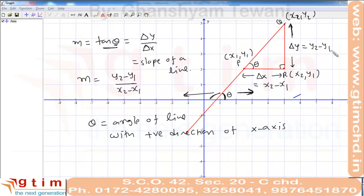The slope of a line remains constant for any selection of two points. Suppose we select points P and S on the line and consider triangle PTS. We get different values of delta Y and delta X, but the ratio is always tan theta because triangles PTS and PRQ are similar. So we can say the slope of a straight line is always constant, irrespective of the selection of any two points.